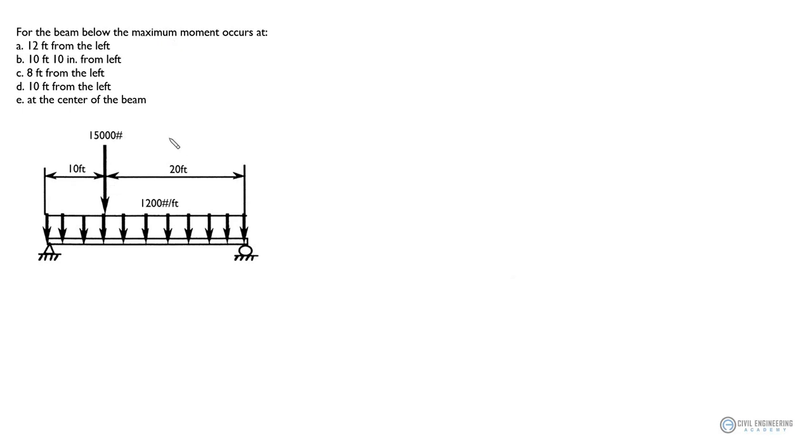So the plan is we're going to figure out the reaction at support first. The reaction here is called RA and this is RB. We're going to find out the reaction first and then we can move on to sketch up our shear diagram, because we're looking for the zero shear location. Because at zero shear location, that's where the maximum moment is going to happen.